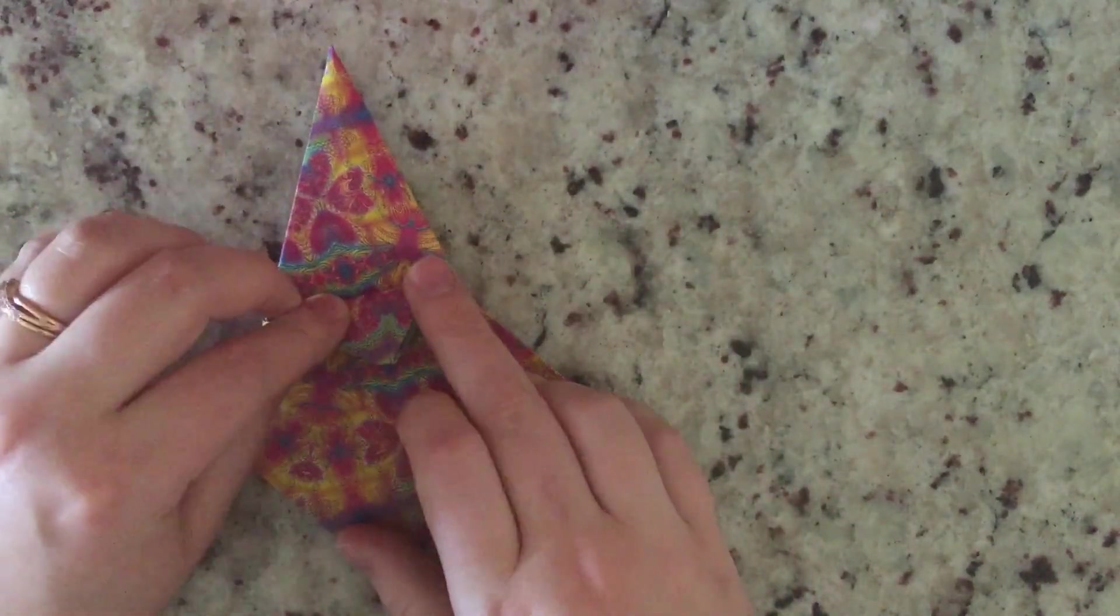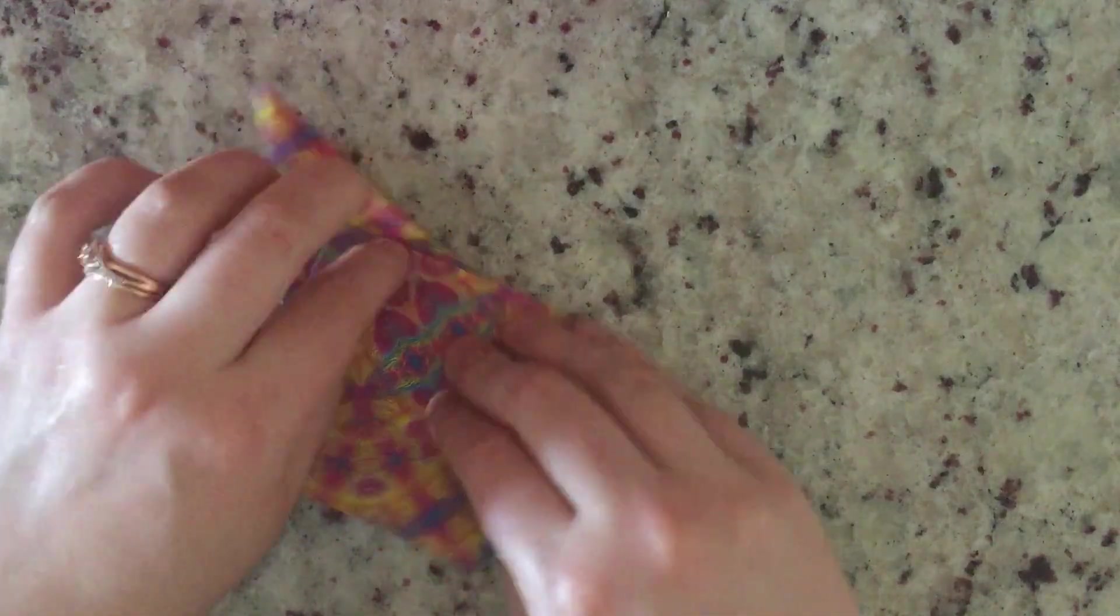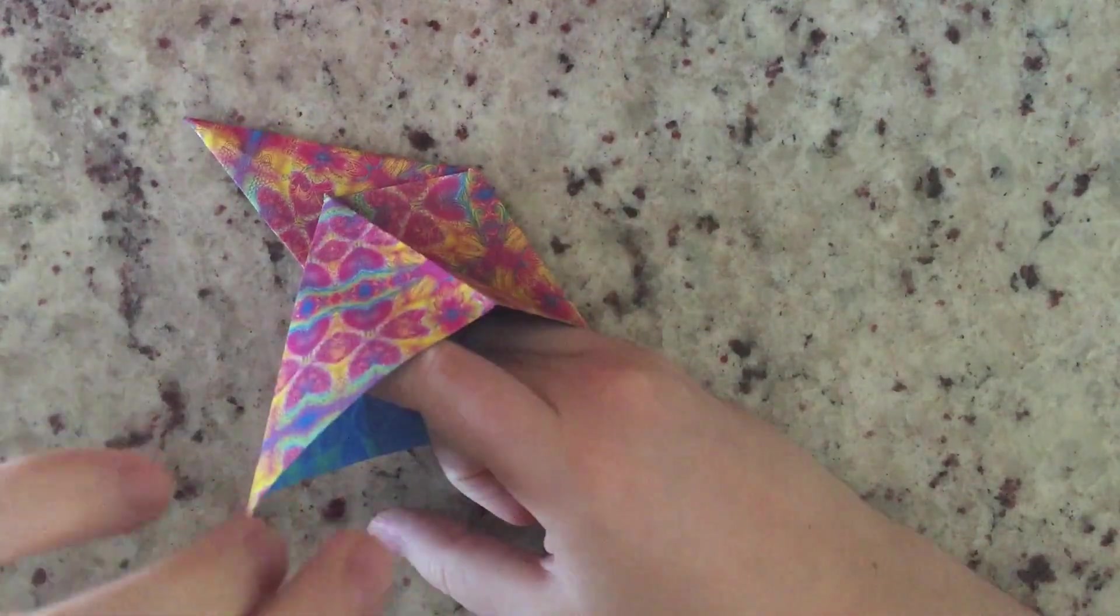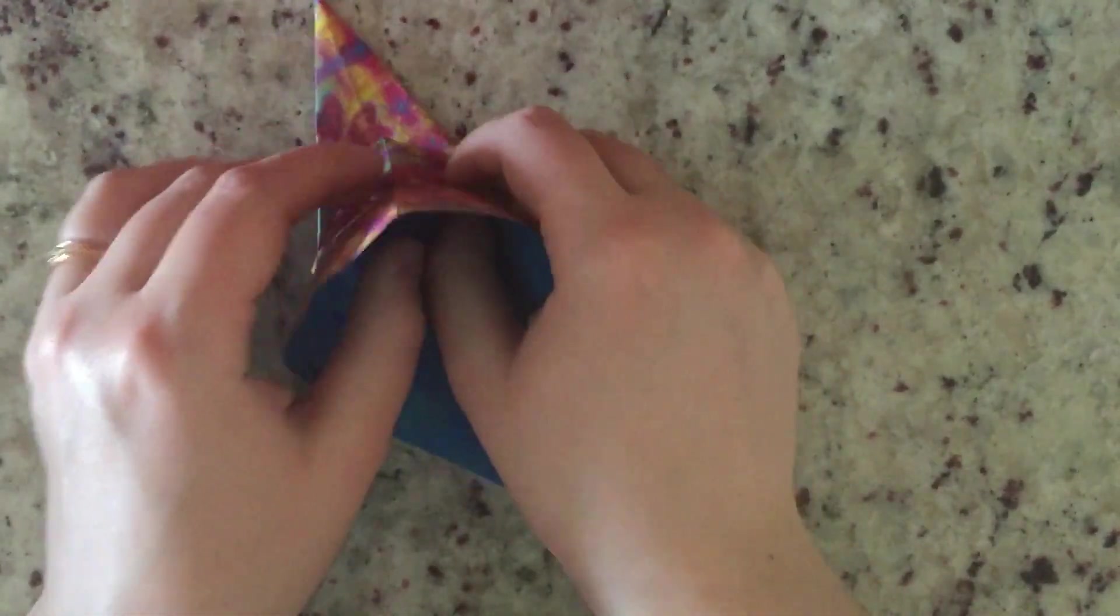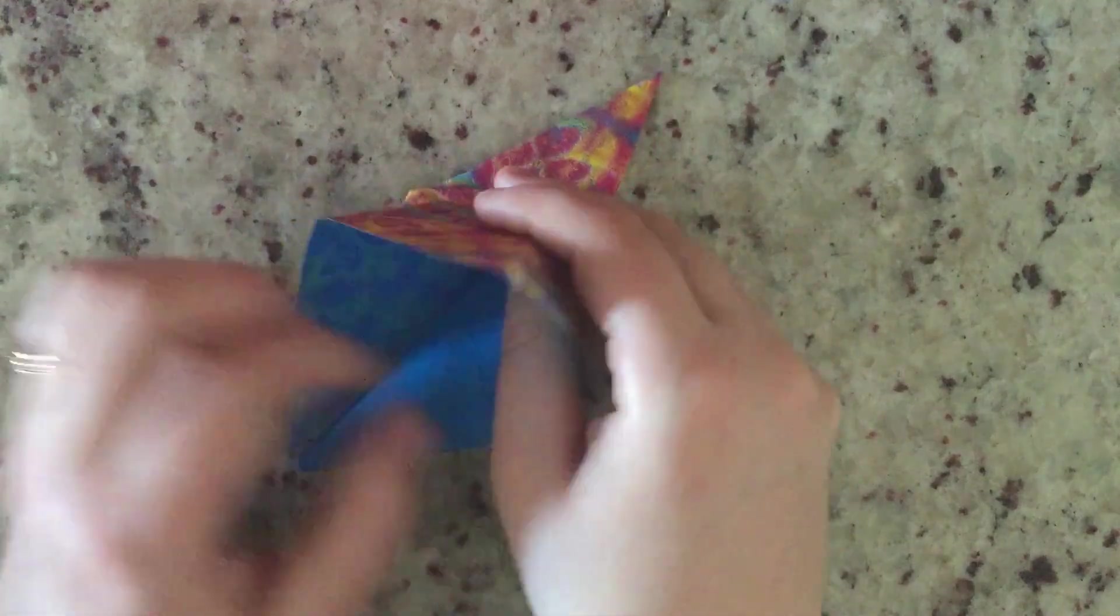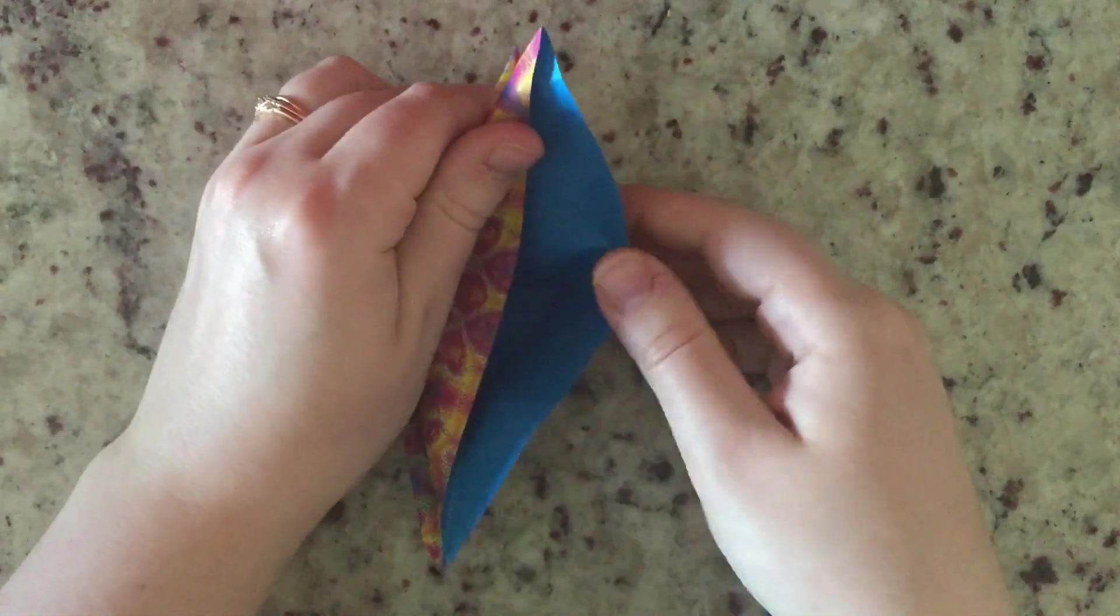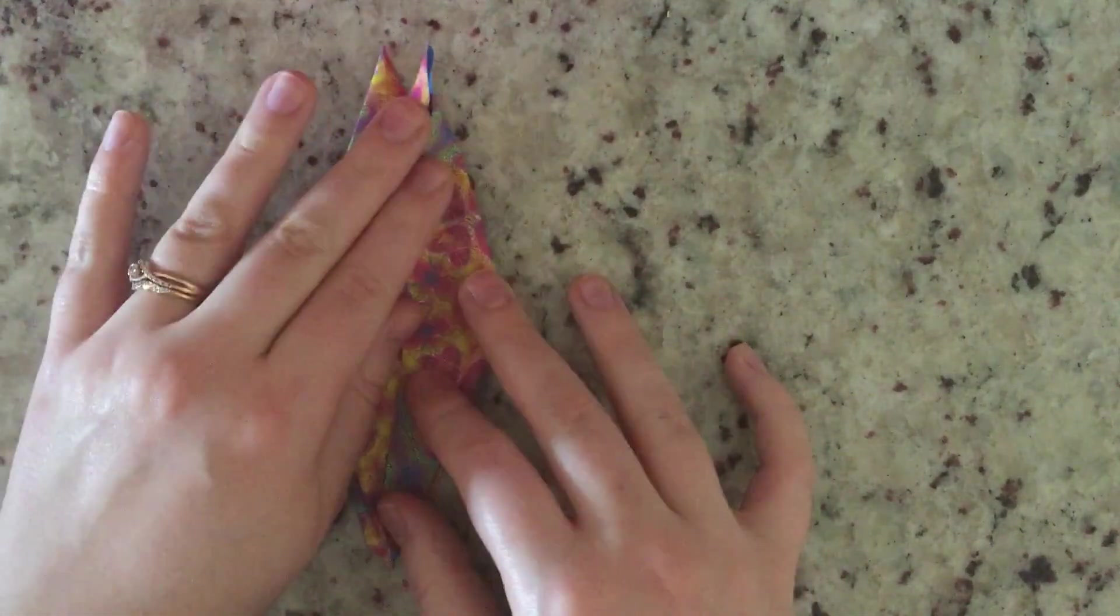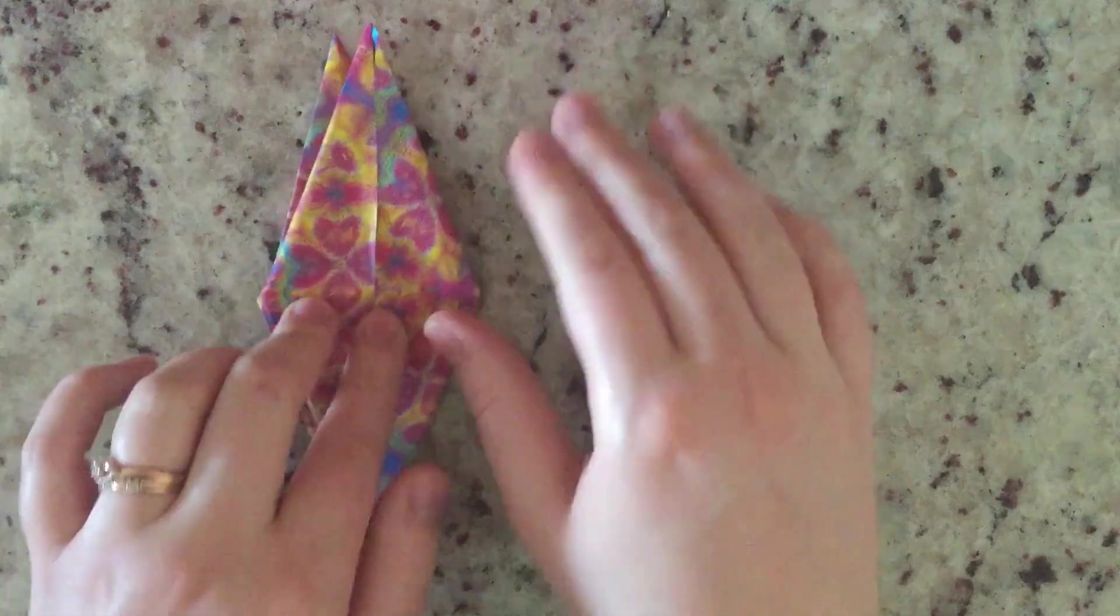I'm going to fold the tip back down here to meet up with this line. Again, you can't really see it, but it's there. I'm going to stick my pinky right up in the corner here. And this might be a little tricky, like you might need to get some help from an adult or something. I find this is the hardest part. There we go.